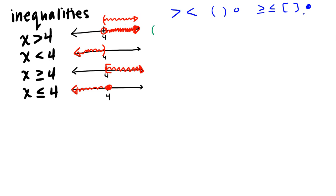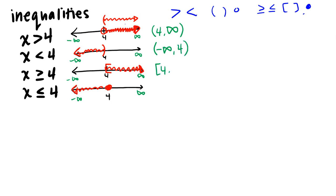The third way to express these is interval notation. From four up to infinity — you can imagine the arrows as infinity and negative infinity — and you read the number line left to right just like domain. So: four to infinity, negative infinity up to four, four to infinity with inclusion, and negative infinity up to four including that value. Infinity always gets a parenthesis because we can never reach it.